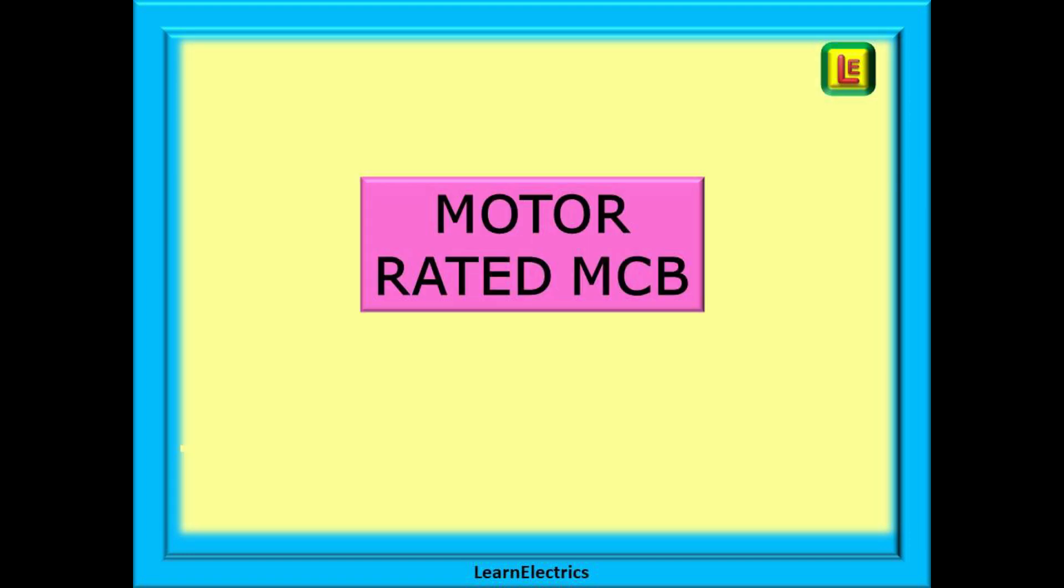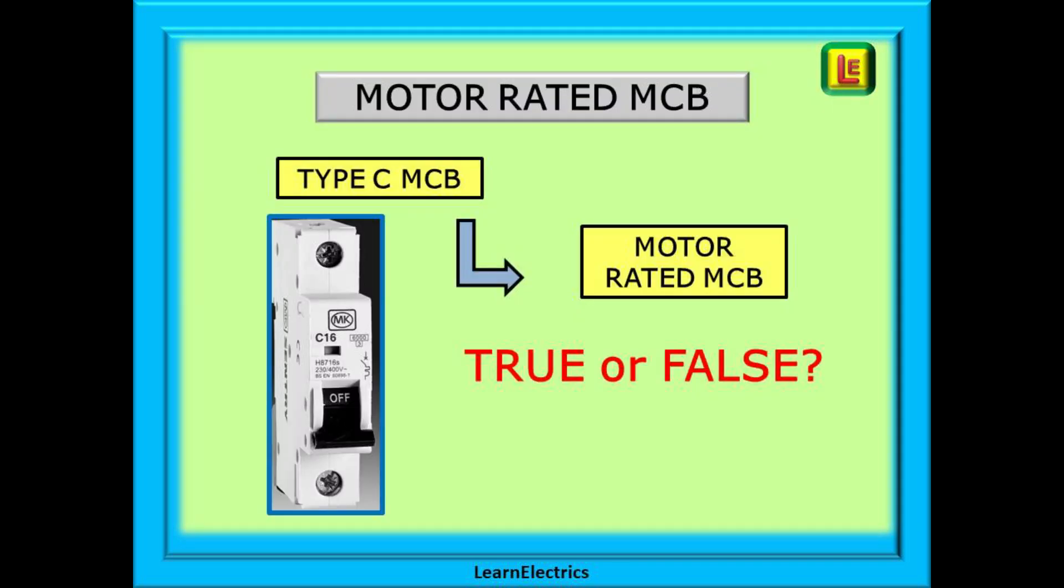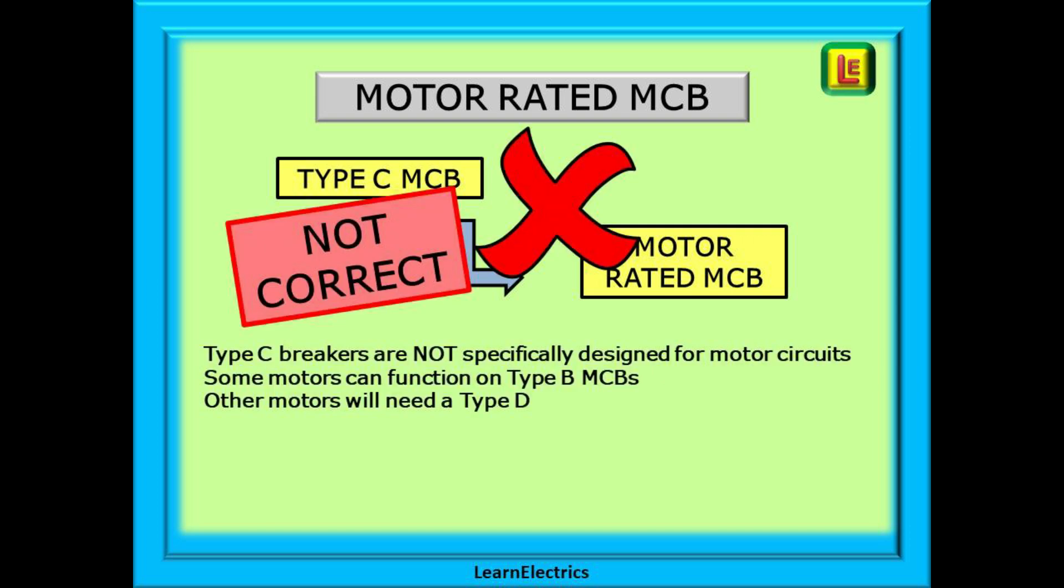Before we go let's consider a motor rated MCB. You will sometimes see type C breakers advertised as motor rated MCBs. This seems to indicate that every motor circuit should have a type C MCB. This is not correct. Type C breakers are not motor rated devices. Type C breakers are not specifically designed for motor circuits. Yes we can install a motor on a type C but some motors can function just as well on type B MCBs and at other times a motor will need a type D. We always install the MCB that is correct for the job.